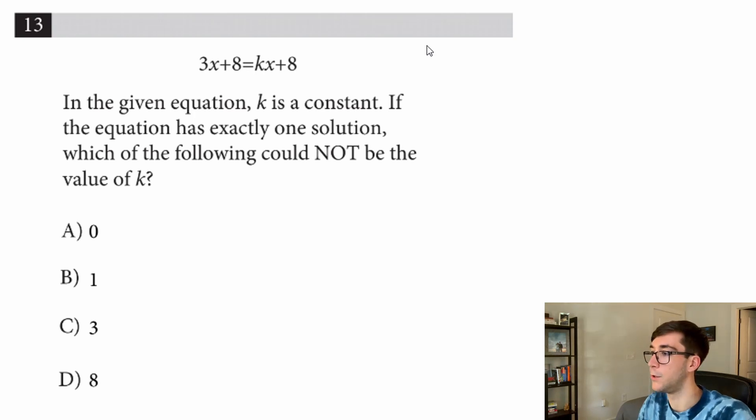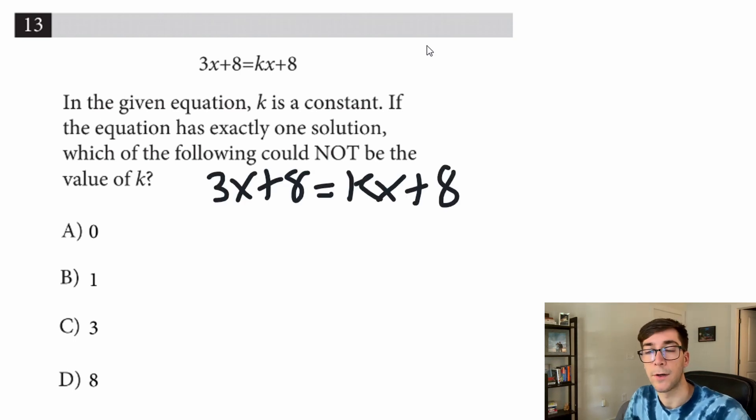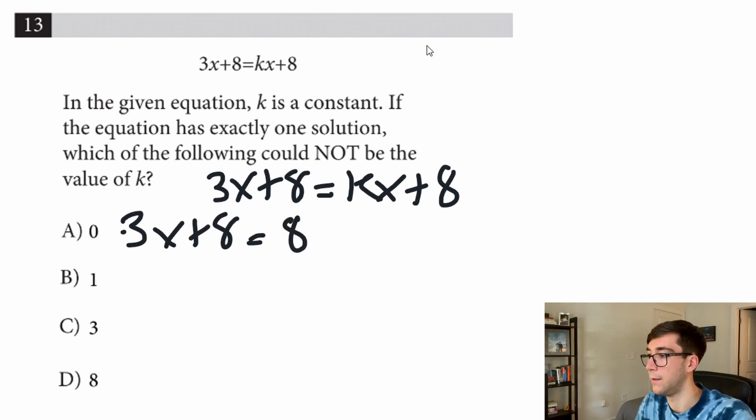The question says in the given equation, k is a constant. If the equation has exactly one solution, which of the following could not be the value of k? So I'm just going to start plugging in these solutions and see which one doesn't give me one solution for the answer. For 0, we would have 3x plus 8 equals 0x, so just 8, and that would be 3x equals 0, x equals 0. That one gives us one answer, it can't be that.